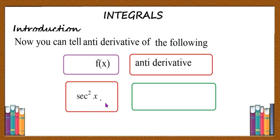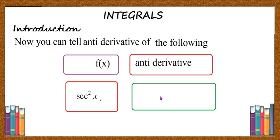What is the anti-derivative of sec square x? You can tell the answer easily: sec square x is the derivative of what? Sec square x is the derivative of tan x, therefore anti-derivative of sec square x is tan x.